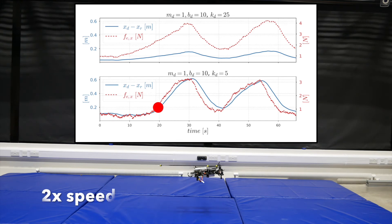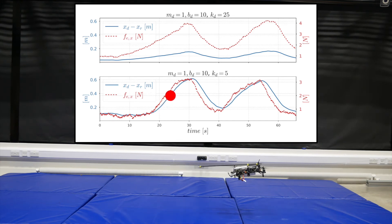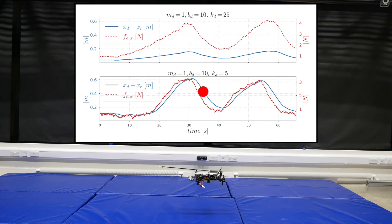The upper plot depicts a stiff virtual system, with K equal to 25, while the lower plot depicts a less stiff or more compliant virtual system, with K equal to 5.